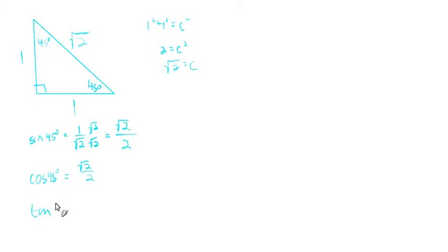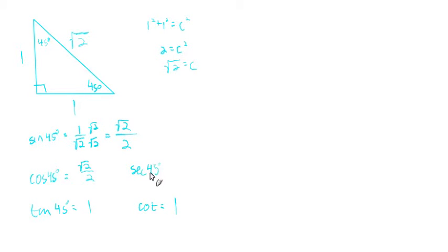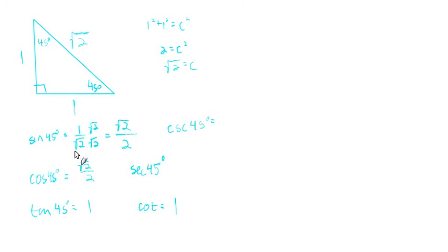The tangent of 45° is opposite over adjacent = 1/1 = 1. The cotangent is the reciprocal of tangent = 1. The secant is the reciprocal of the cosine. Since cosine and sine are both √2/2, cosecant and secant are both the same. Flipping √2/2 over gives √2/1 = √2. So sec(45°) = csc(45°) = √2.